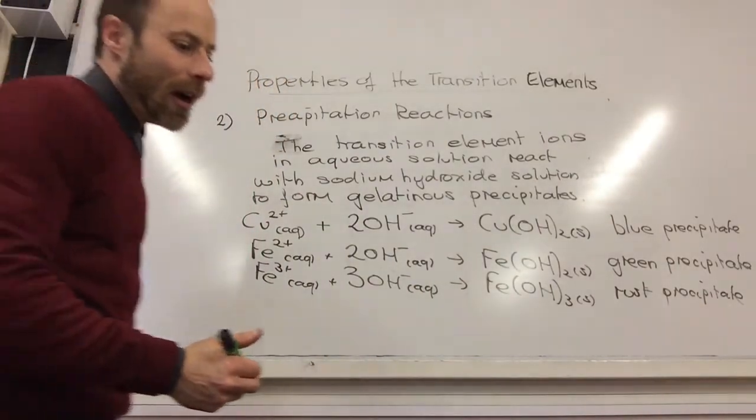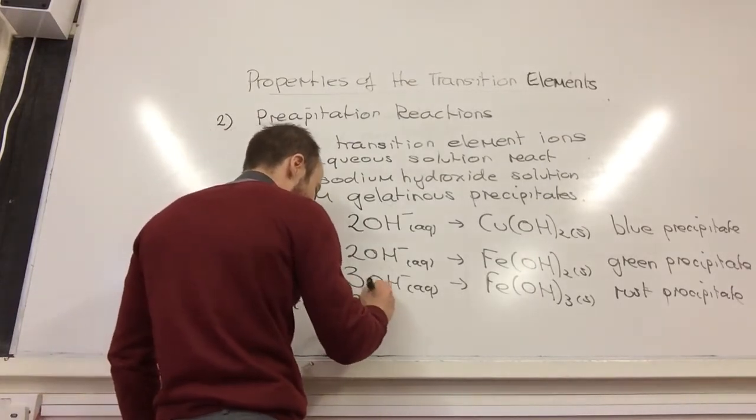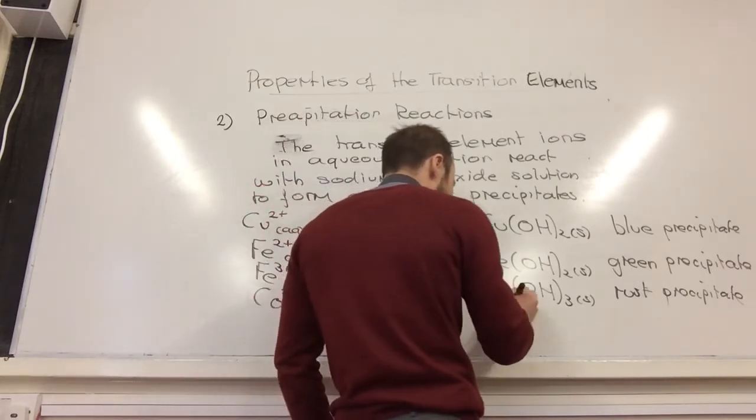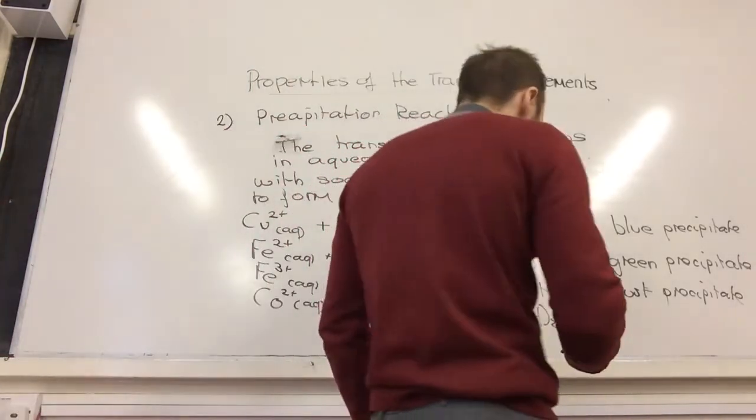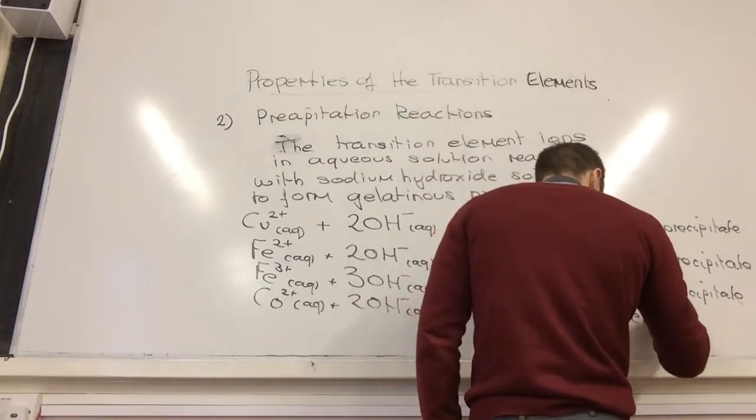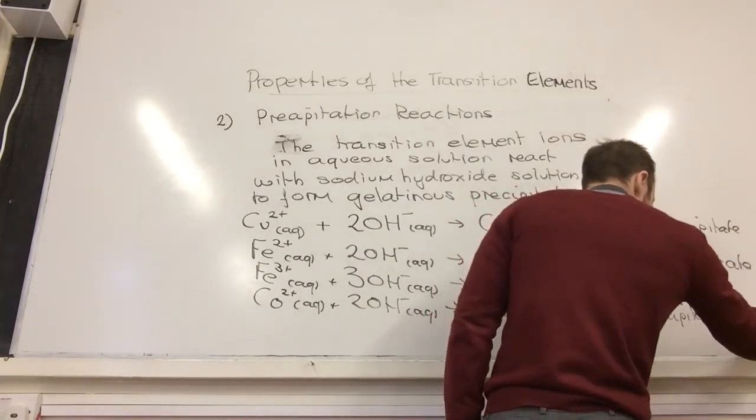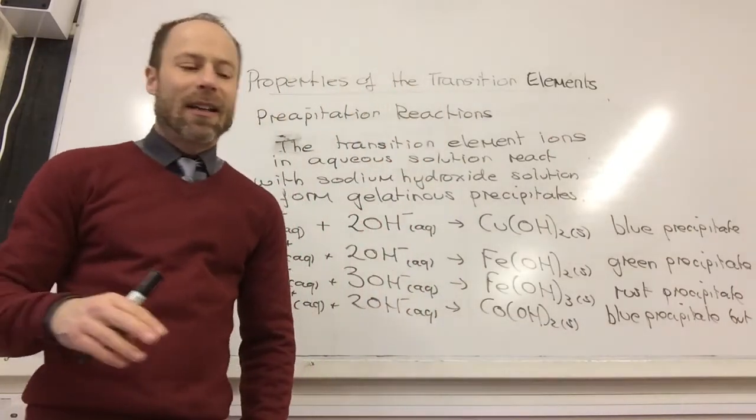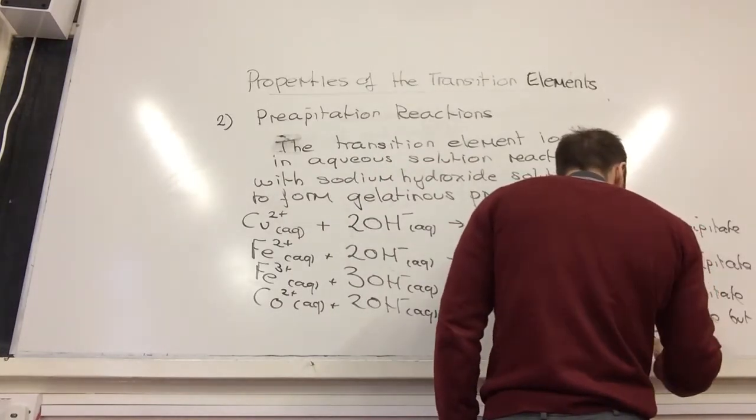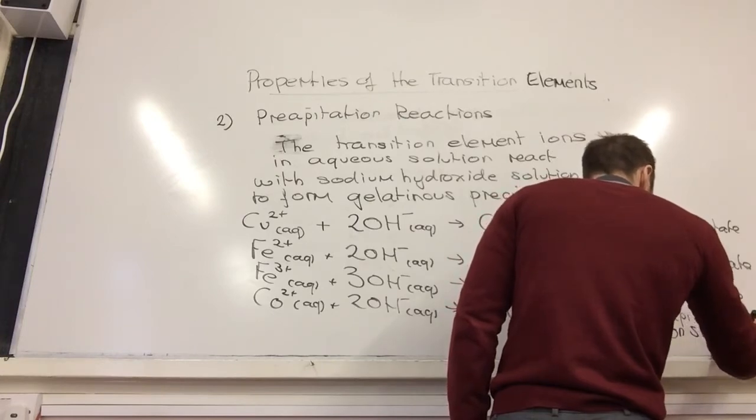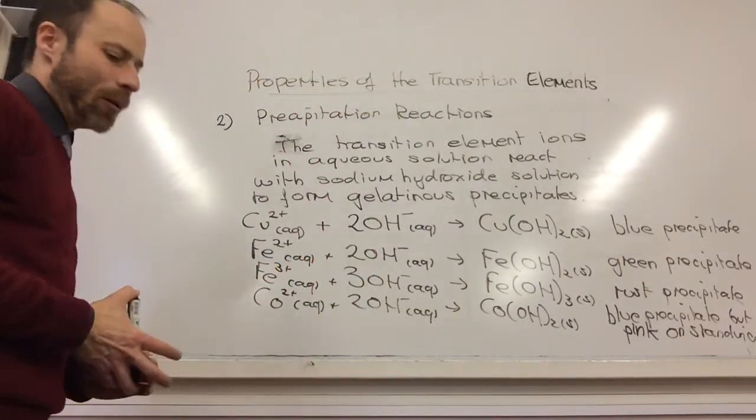And the final one, this one is a little bit confusing. This is cobalt two plus aqueous plus two hydroxide ions. That gives me cobalt two hydroxide, but the color is a little bit weird. It's blue, but goes a pink color if you let it stand. So initially it's blue, and then if you leave it hanging around, it will go pink. That will be the final color.